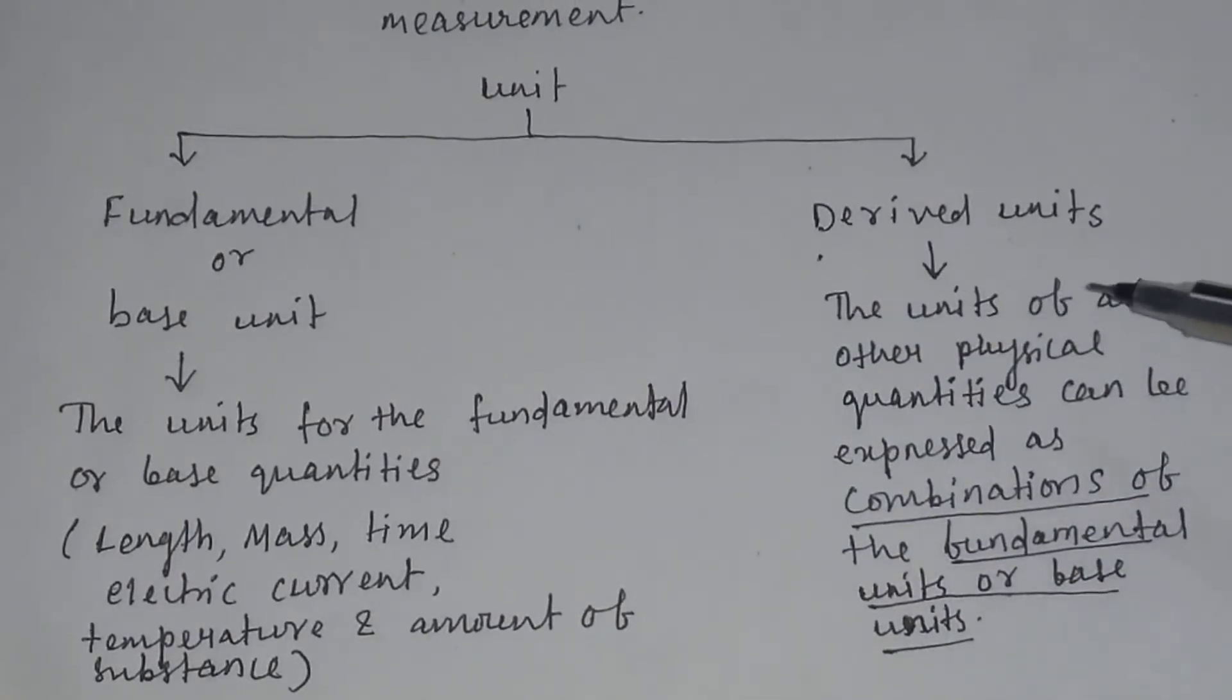Then what are derived units? The units of all other physical quantities can be expressed as combinations of the fundamental units or base units. So, combinations of the fundamental units or base units are called derived units.